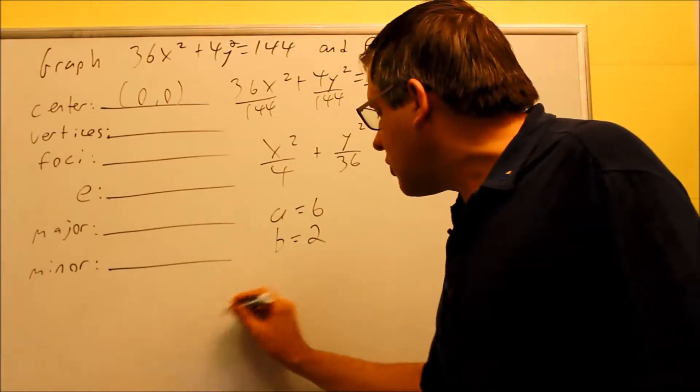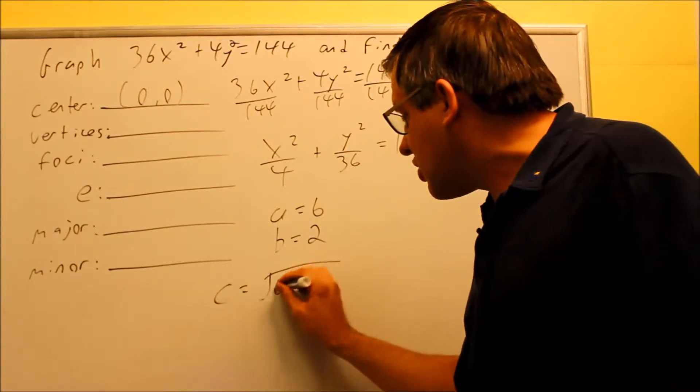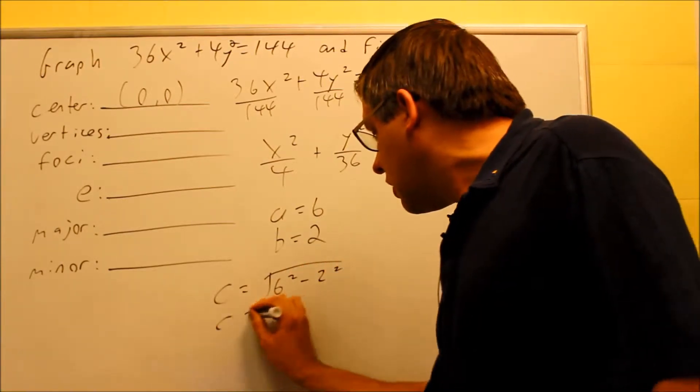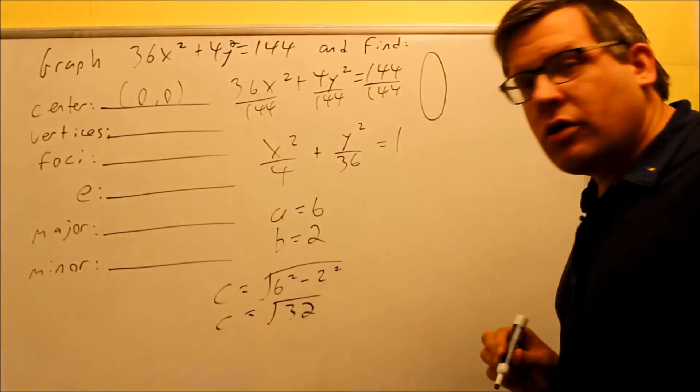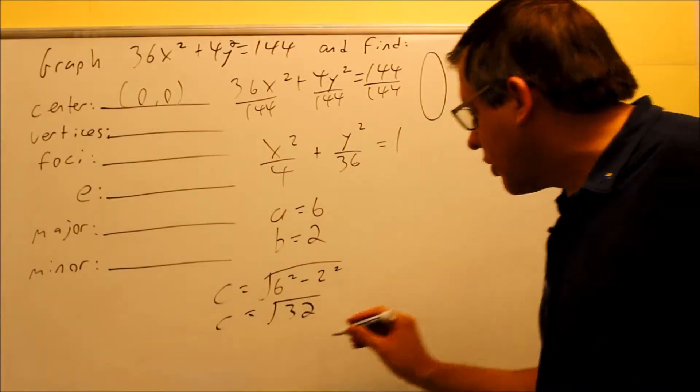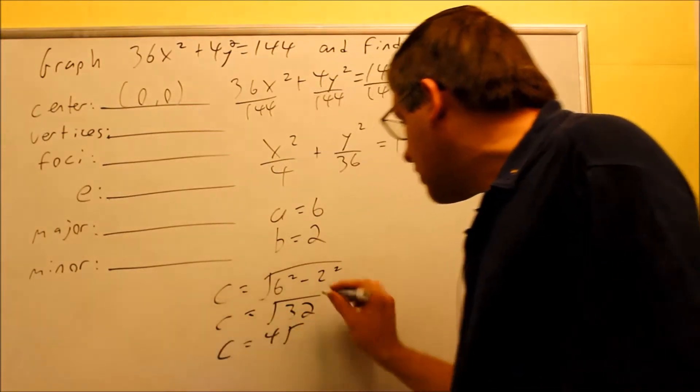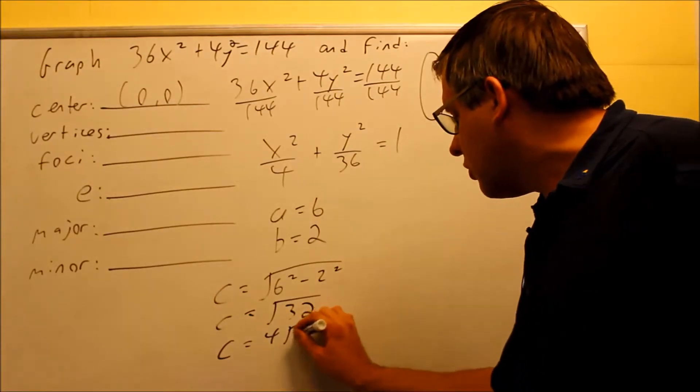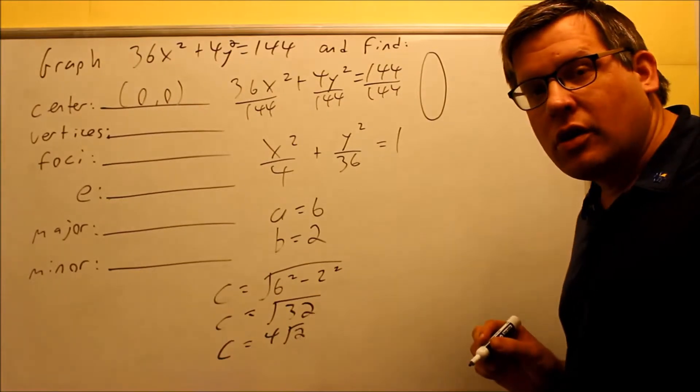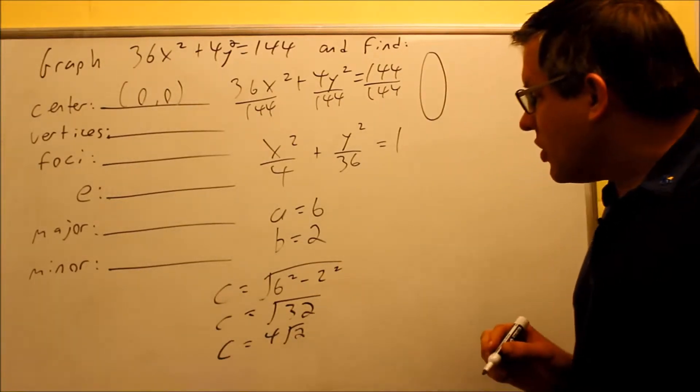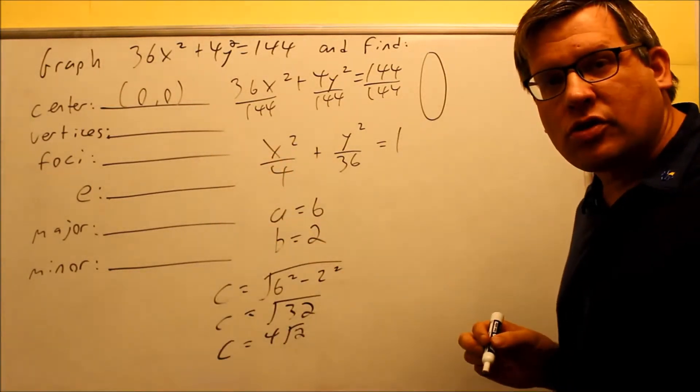We want to find the c value. We can do c by doing the square root formula, a² minus b², so 6² minus 2². And you're going to get 36 minus 4, which is going to be the square root of 32. Now square root of 32, we can write as 16 times 2, which means that the square root of 16 is 4 comes out, and we get 4√2 there as our c value. Okay, so now that we have that complete, we're ready now to answer these questions here.